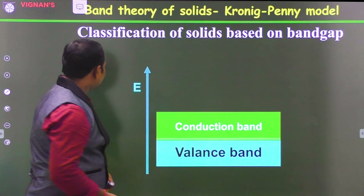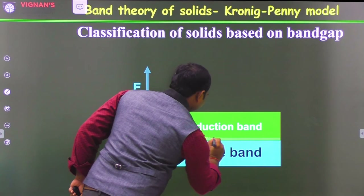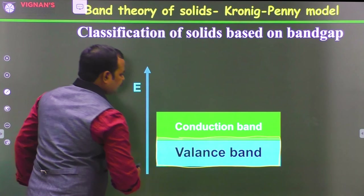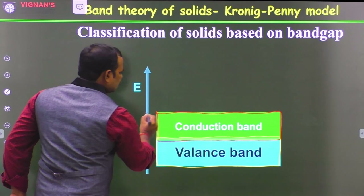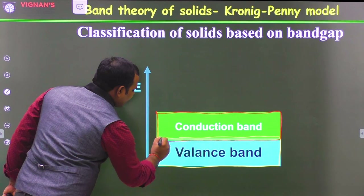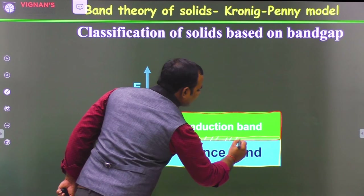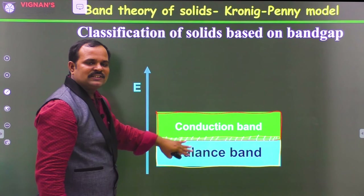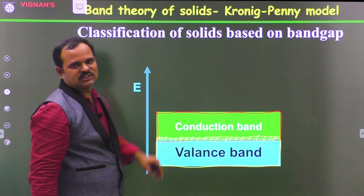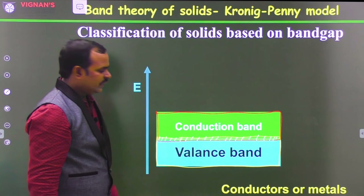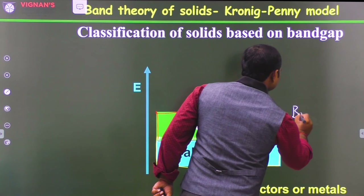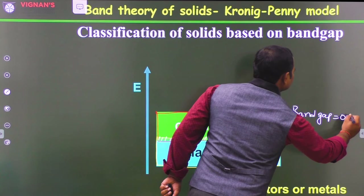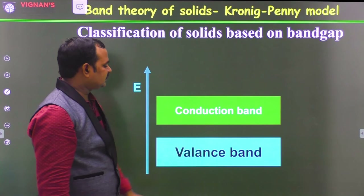In some materials, the valence band and conduction band are merging — there is an overlap where the conduction band and valence band meet. So electrons in the valence band can easily go into the conduction band and participate in the conduction process. These materials are called conductors or metals. In conductors and metals, the valence band and conduction band merge — there is no band gap, meaning the band gap is 0 electron volts.